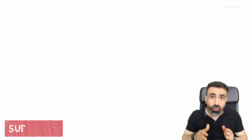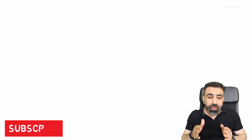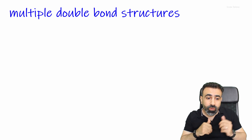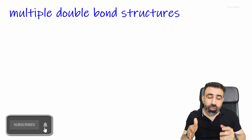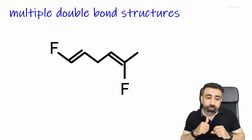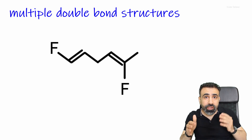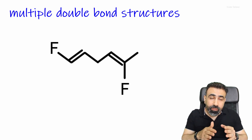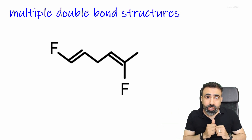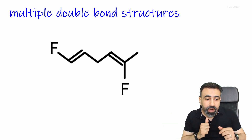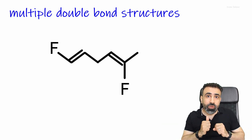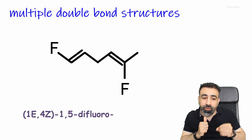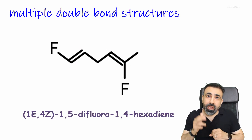What if you want to name an isomer with more than one double bond using the EZ system? Simply indicate the number of each double bond and its type in brackets, then name the structure. For example, this structure is named (1E,4Z)-1,5-difluoro-1,4-hexadiene.